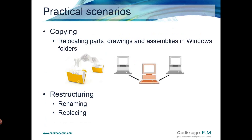The reason why we would use Revision Manager is to copy files around — whether that's between one folder and another on my workstation, between one workstation and another workstation, or a workstation and a server. It's for copying one or more solid files from one location to another. It can also be used for restructuring assemblies and drawings, replacing files, renaming files, and revising files.